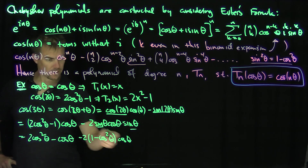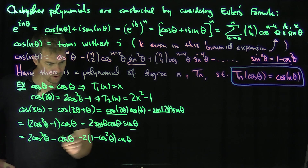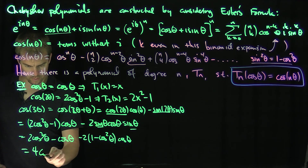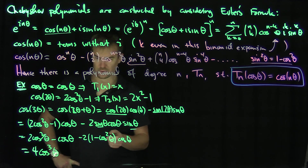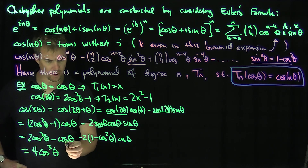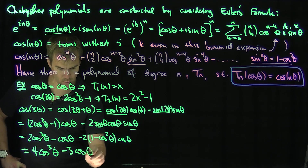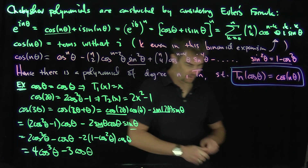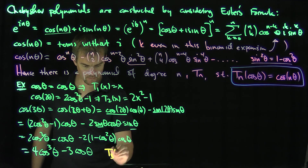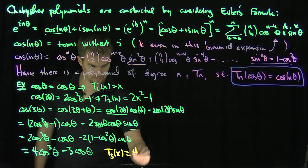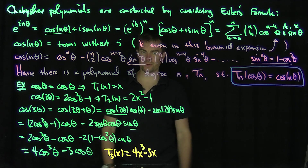Counting the cosine-cubed terms gives 4·cosine^3(theta), and the cosine terms give -cosine - 2·cosine = -3·cosine(theta). So T_3(x) = 4x^3 - 3x. That's the third Chebyshev polynomial.